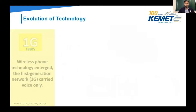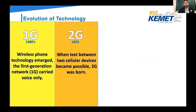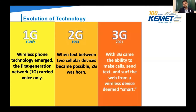Before we talk about 5G, it's important to know what came before it. It all started in the 1980s, where wireless phone technology emerged. The first generation network carried voice only. Then about 10 to 15 years later, we had the second generation — this is when text messages between two devices were possible. Then we had 3G, which a lot of us are familiar with. This is when we started using the term smartphones, and we were able to make calls, send texts, and surf the internet.